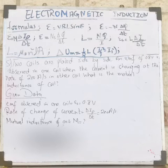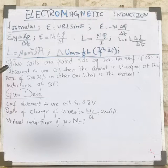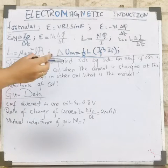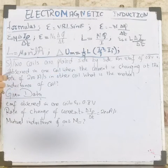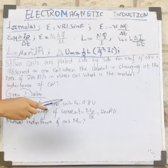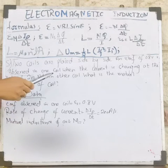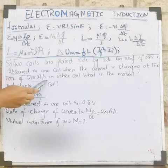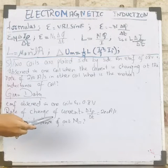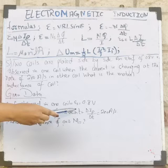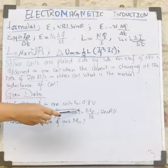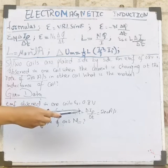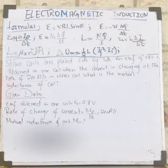First of all, let's find the given data. The EMF observed in one coil is 0.8V. Furthermore, the current is changing at the rate of 200 amperes per second — that is, the rate of change of current, delta I_p divided by delta t, equals 200 amperes per second.